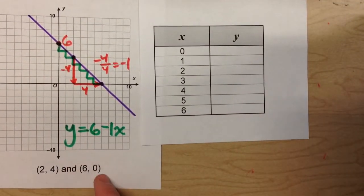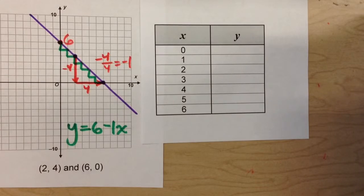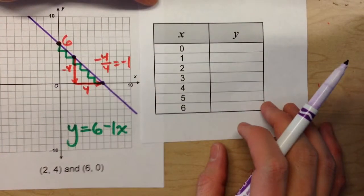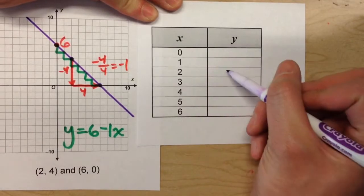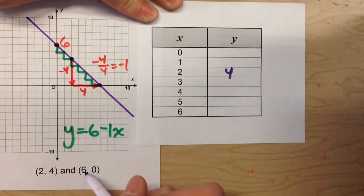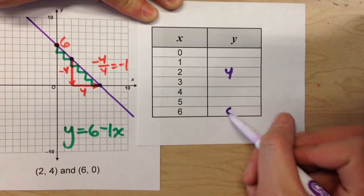So instead of plotting these two points, we can put them in a table and use what we've learned about tables to figure out the slope and the y-intercept. So 2, 4 and 6, 0.